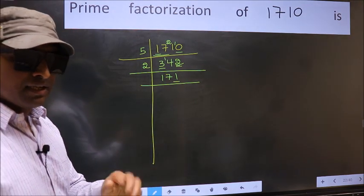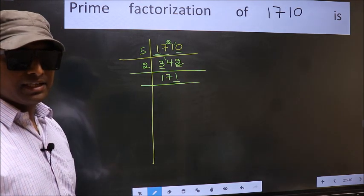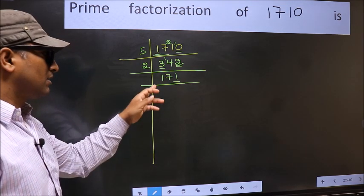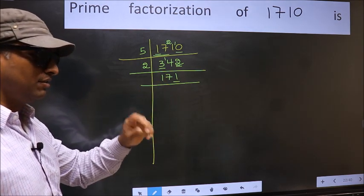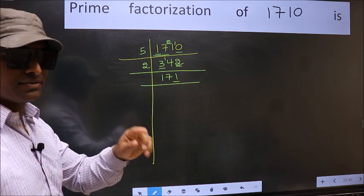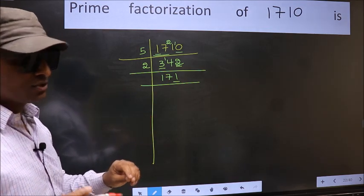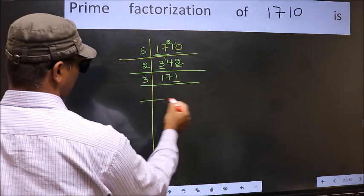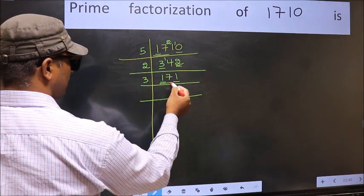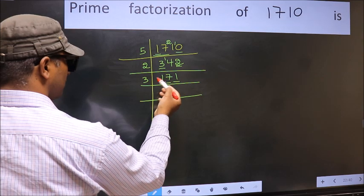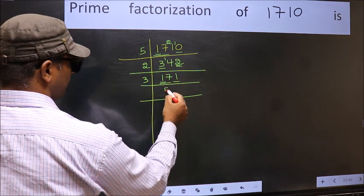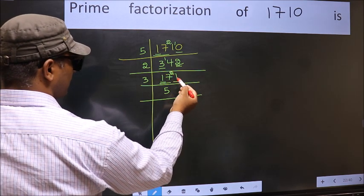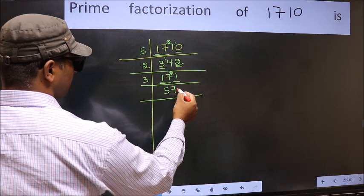Next prime number: 3. To check divisibility by 3, we should add the digits. 1 plus 7 plus 1 equals 9, and 9 is divisible by 3. So this number is also divisible by 3. So we take 3 here. First number is 1, which is smaller than 3, so take the 2-digit number 17. A number close to 17 in the 3 table is 3×5=15. 17-15=2, carry 2 forward to get 21. When do we get 21 in the 3 table? 3×7=21. So 171 ÷ 3 = 57.